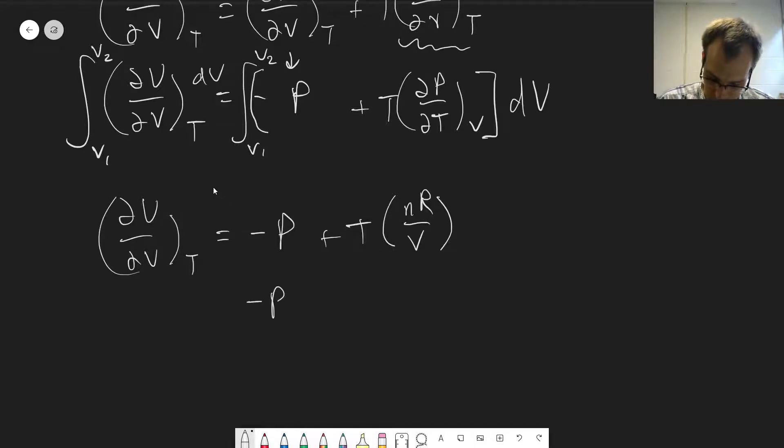We get nR over V. And so this is equal to minus P plus nRT over V. But because this is the ideal gas law, nRT over V is equal to pressure, and so this does become zero, as we'd expect.